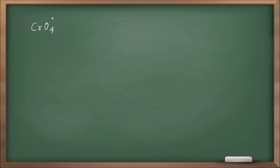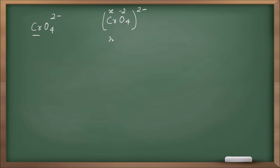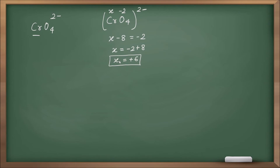Example: CrO4²⁻ — what is the oxidation number of chromium? Let chromium = x, oxygen = minus two. So: x + 4(−2) = −2, which gives x − 8 = −2, so x = minus two plus eight, x = plus six. The oxidation number of chromium is plus six.